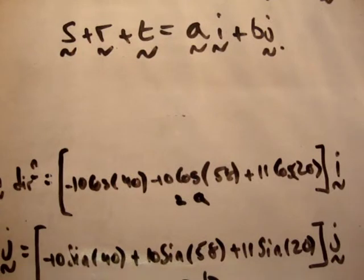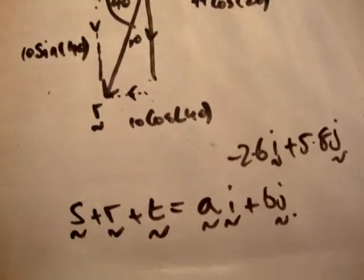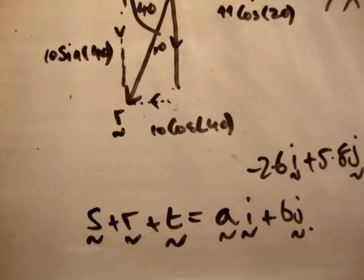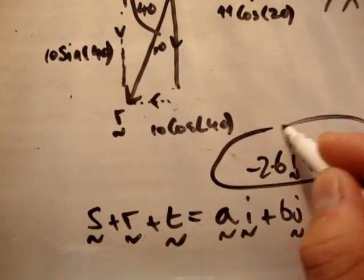And then for the j hat, minus 10 times the sin of 40 plus 10 times the sin of 58 plus 11 times the sin of 20. It gives me an answer of 5.81. So this answer here is what the book gives and is in actual fact correct. And that's how you do that.